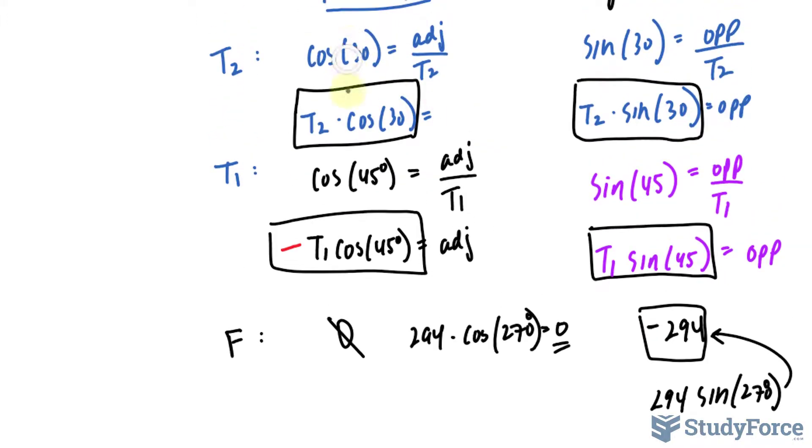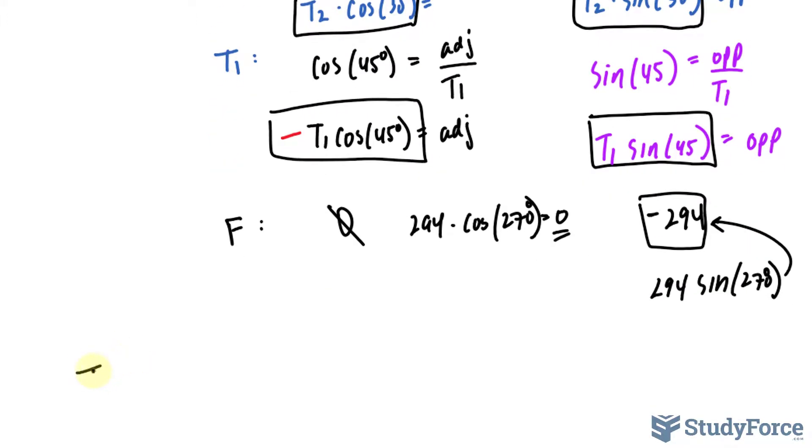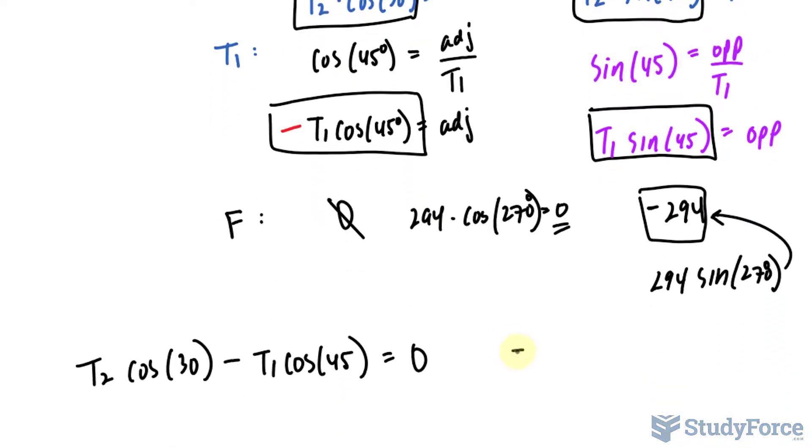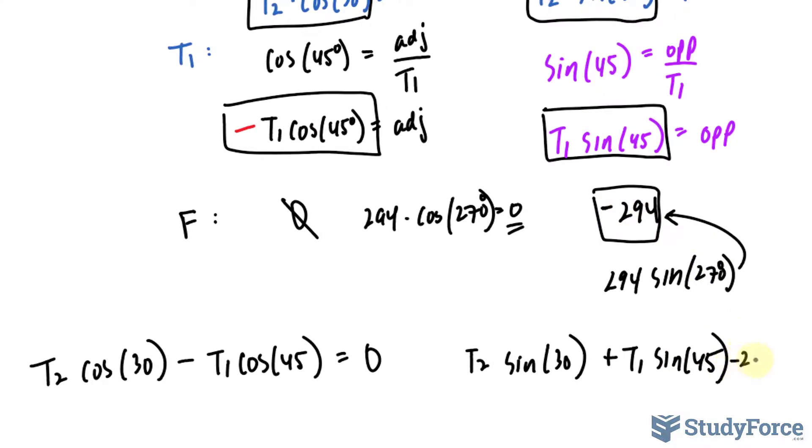Let's begin with this column. We add T2 cosine 30, and we're adding this, so it becomes minus T1 cosine 45, and that's equal to zero. For this column, we'll have T2 sine 30 plus T1 sine 45 plus negative 294, which equals zero.